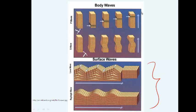S waves are the other type of body waves, and they travel at about 3.3 kilometers per second. They cause the ground to compress and stretch at right angles to the direction of the wave's motion, so the ground moves up and down. They cause a lot of structural damage — more than P waves — and they're also known as shear waves. Take a look at the images in your textbook in table 12.3.